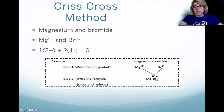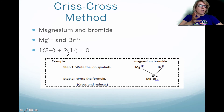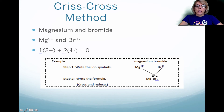Now, if you want to balance these ions to make sure there's an overall 0 charge, notice that there's a subscript of 1 for magnesium, and it has a 2-plus charge. Adding it to a subscript of 2 with an overall minus charge gives us positive 2 plus negative 2, so the overall charge is 0.